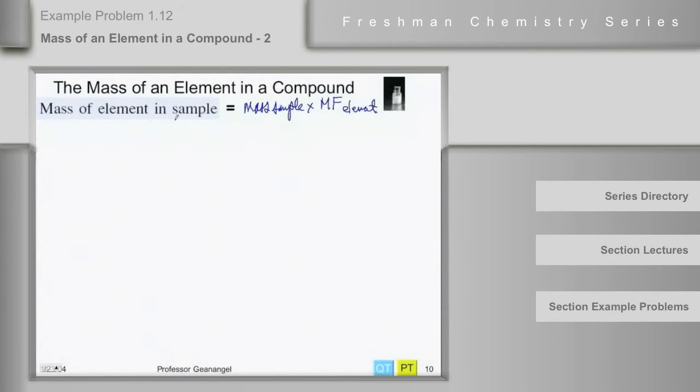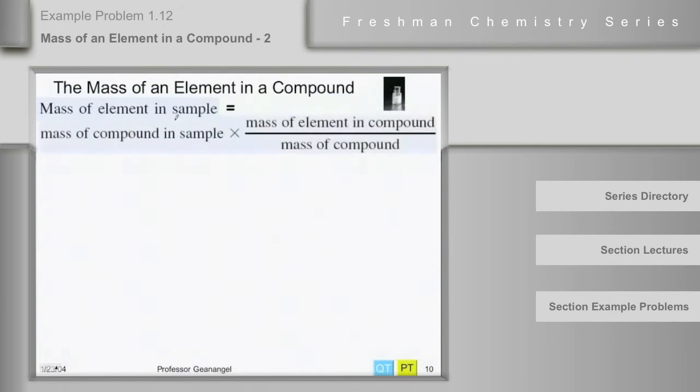So if we look at this, it's the mass of the compound in the sample times this ratio, which is the mass fraction. The mass of the element in the compound times the mass of the compound.